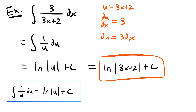For our next example, we have a definite integral: the integral from 0 to 2 of x squared divided by x cubed plus 1. We have a rational function with a variable in the numerator and denominator, so we won't be able to use our basic rules or the power rule. We'll want to try u substitution. Looking at the denominator, we have x cubed plus 1, and the derivative of a cubed function will be a squared function.